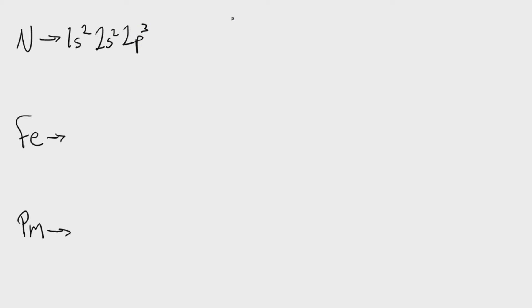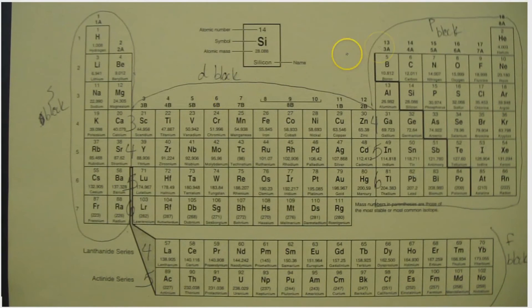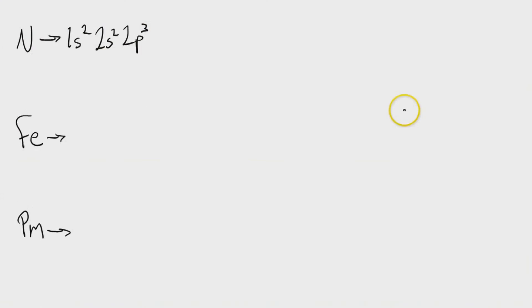Now the brilliant thing about electron configuration is that there is a self-check built right into your answer. If you add up our exponents here, we've got 2 plus 2 is 4, plus 3 is 7. And then we go back to our periodic table, and you can see that nitrogen is element number 7. So you know that you have written it correctly.